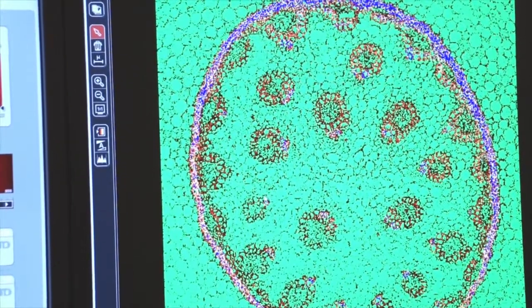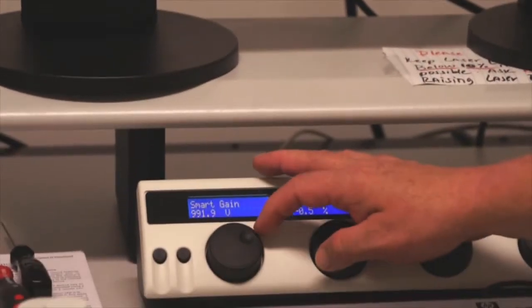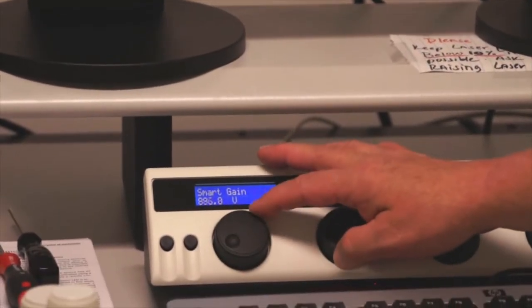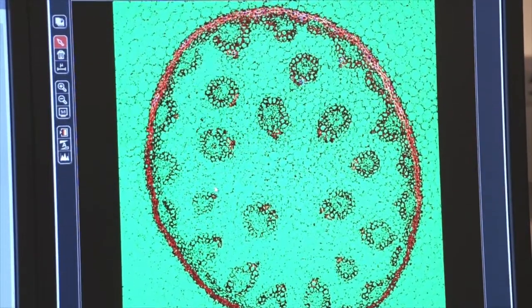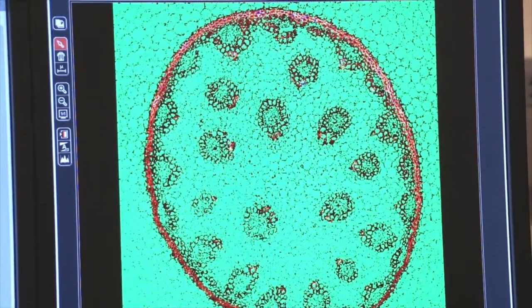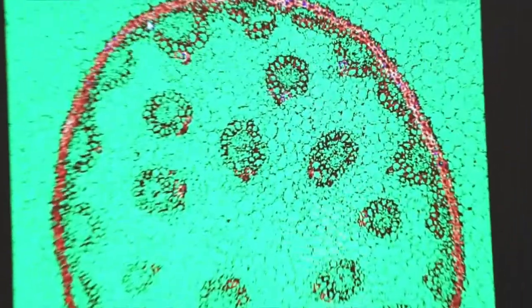Your gain control will change the number of blue pixels in your image, and you want to turn the gain down until you have only a few blue pixels. As you can see here, at about 891, I'm starting to see a few blue pixels in my image.